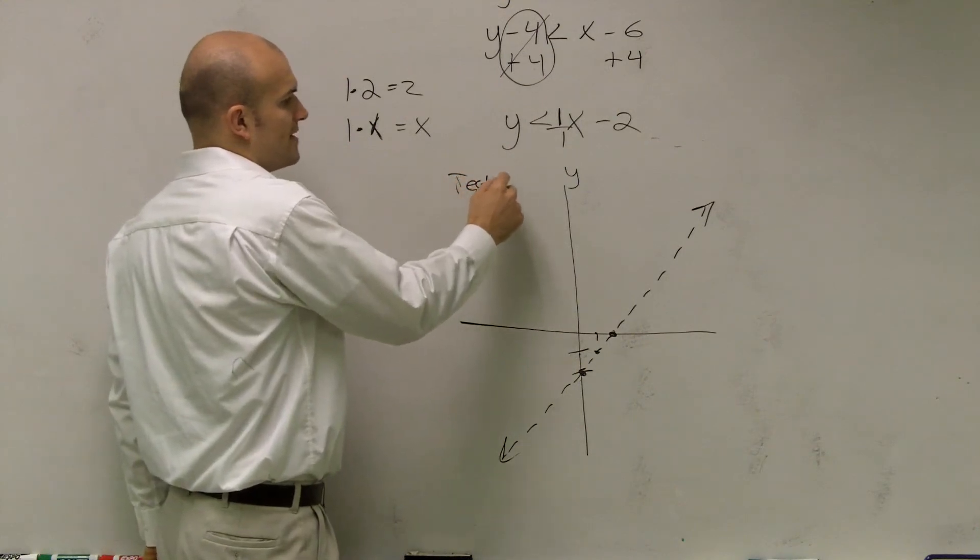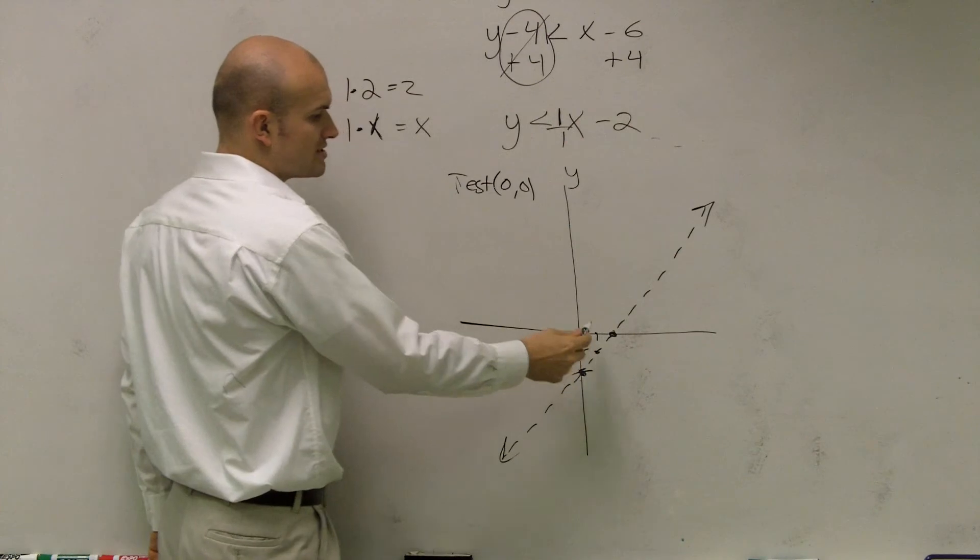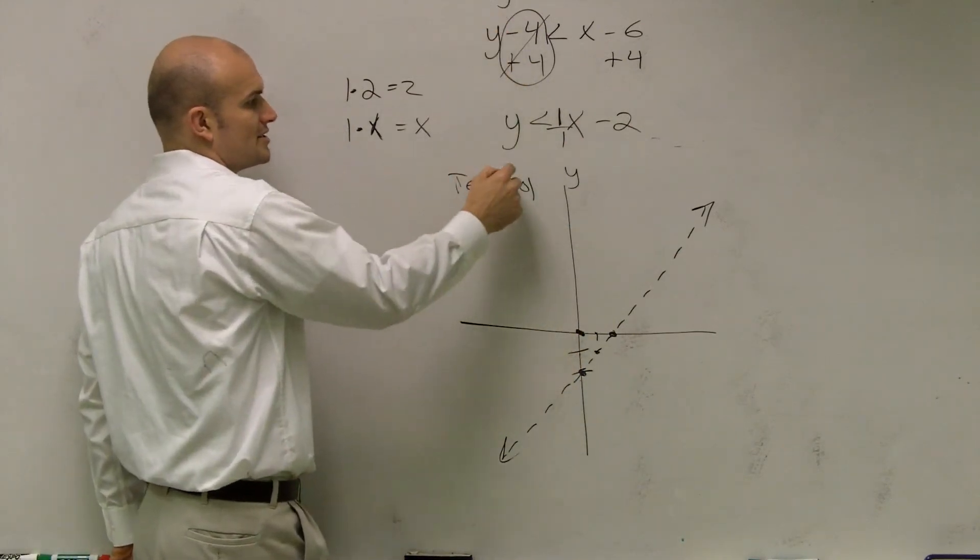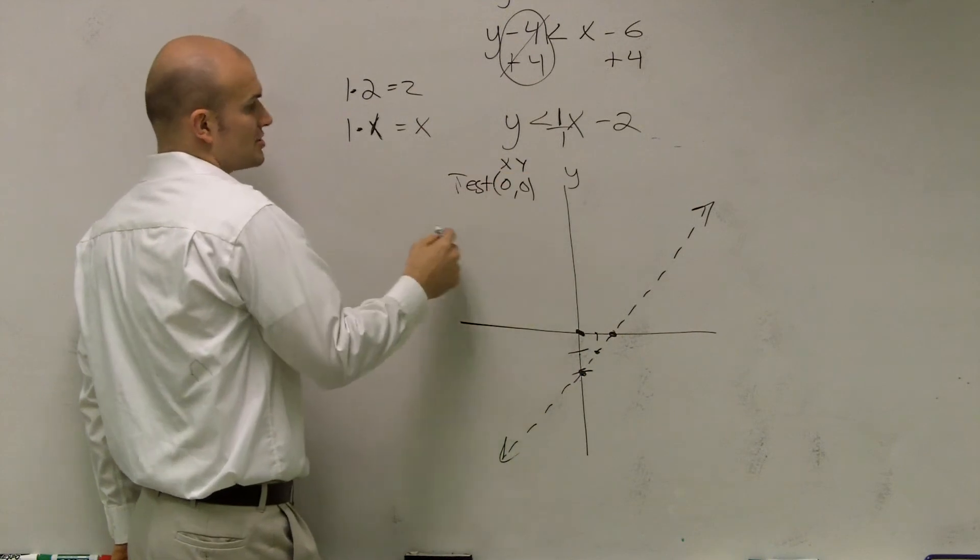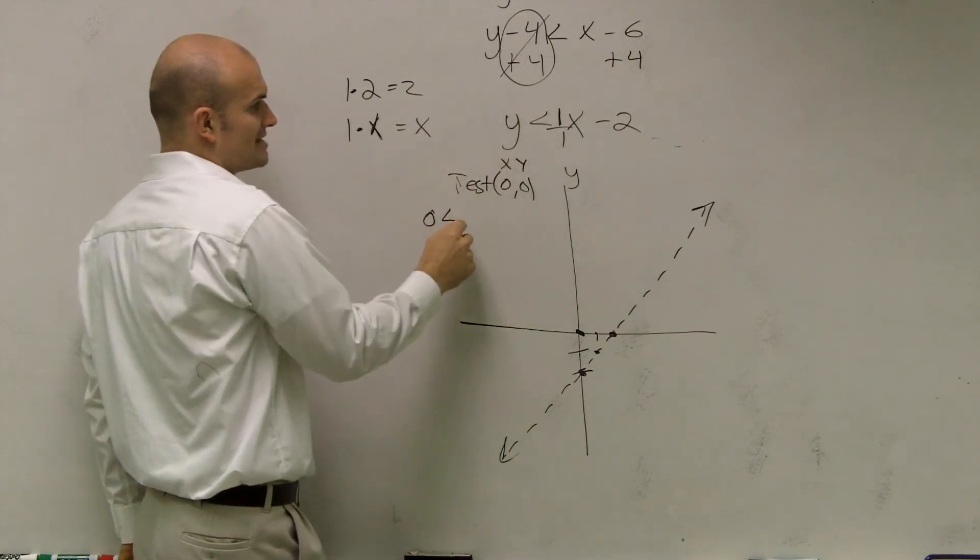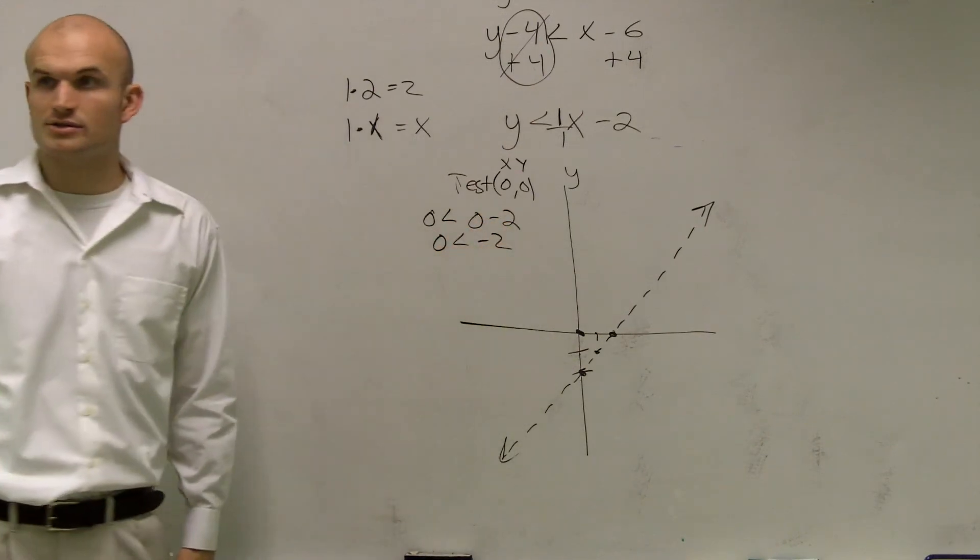So my favorite point to test is 0, 0. I find out where 0, 0 is right there. And then, just plug in 0 for y and 0 for x. So you say 0 is less than 0 minus 2. Is 0 less than negative 2? Is that true or false?